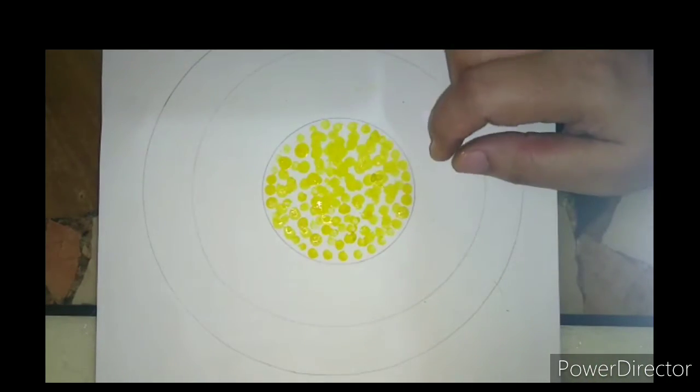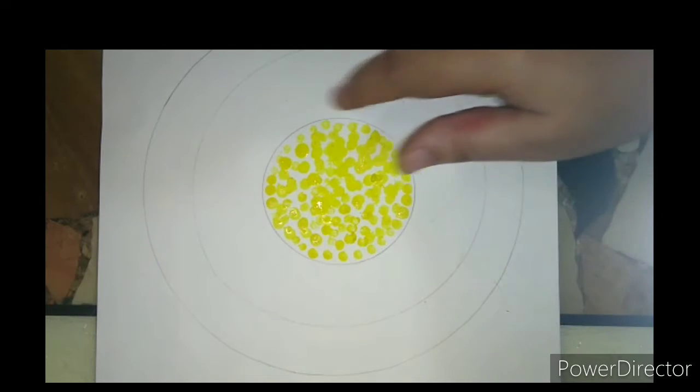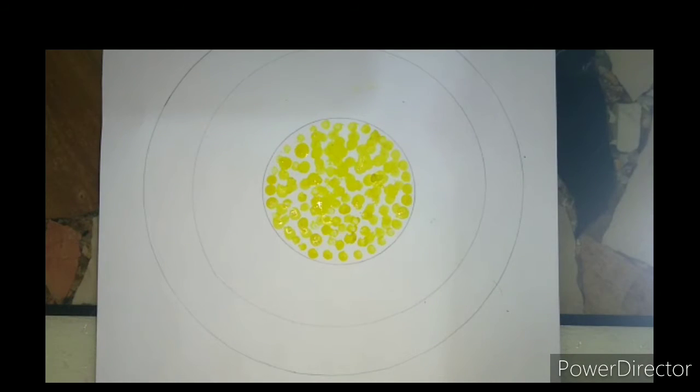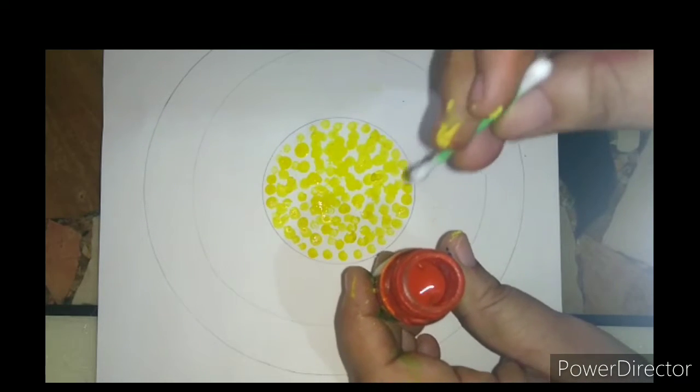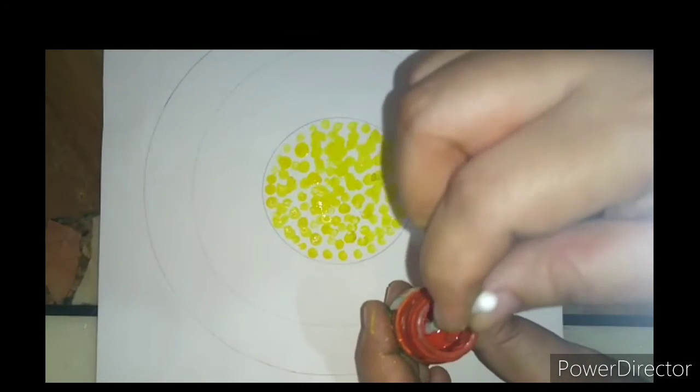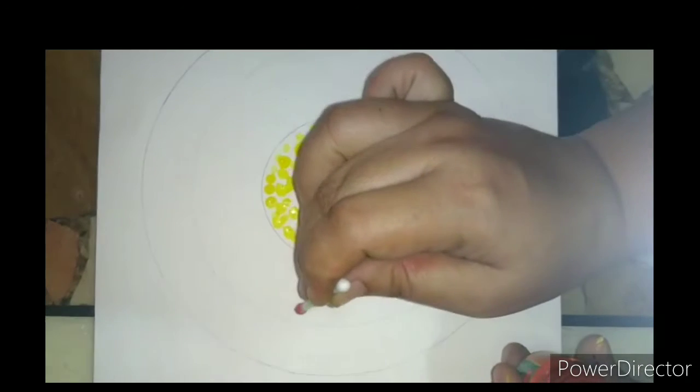My yellow color is over. Now here, I am using red color. Now again take a cotton bud, dip in the poster color, start painting.